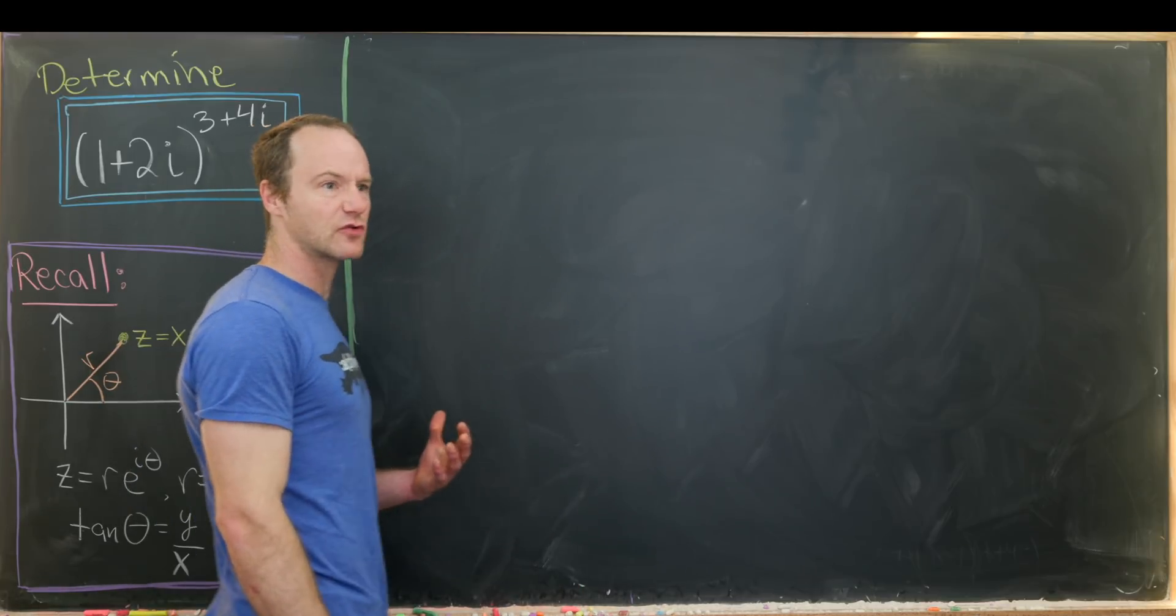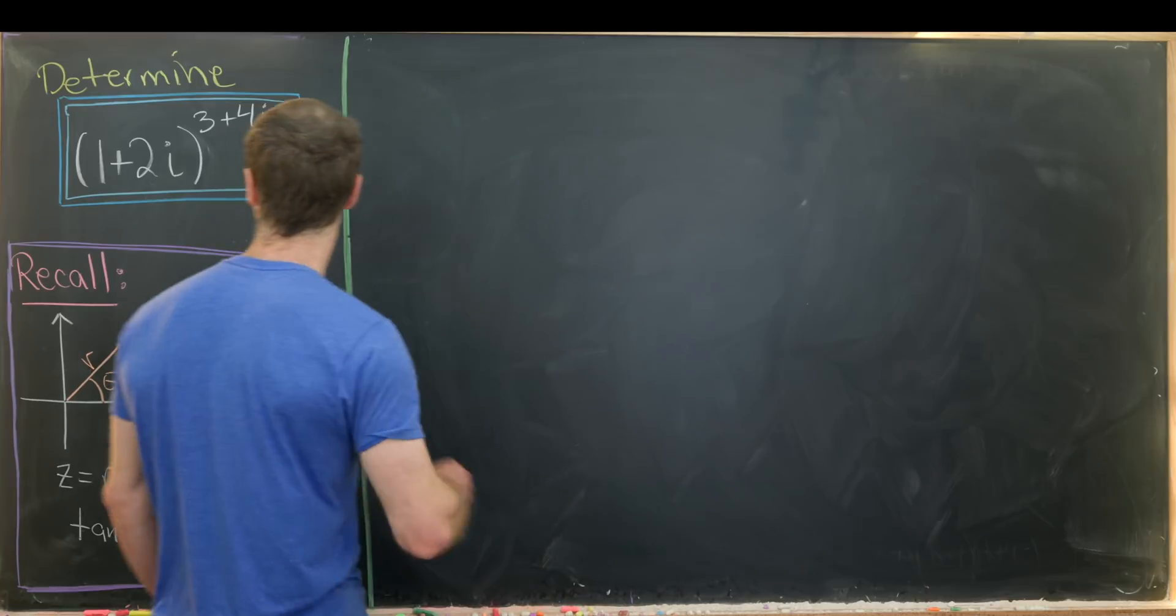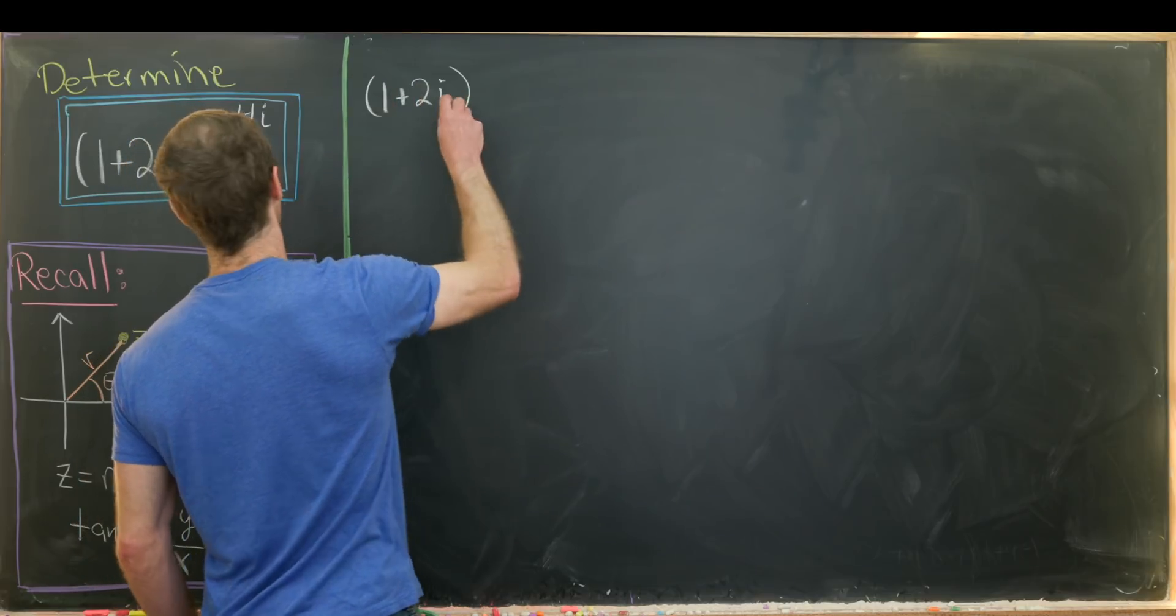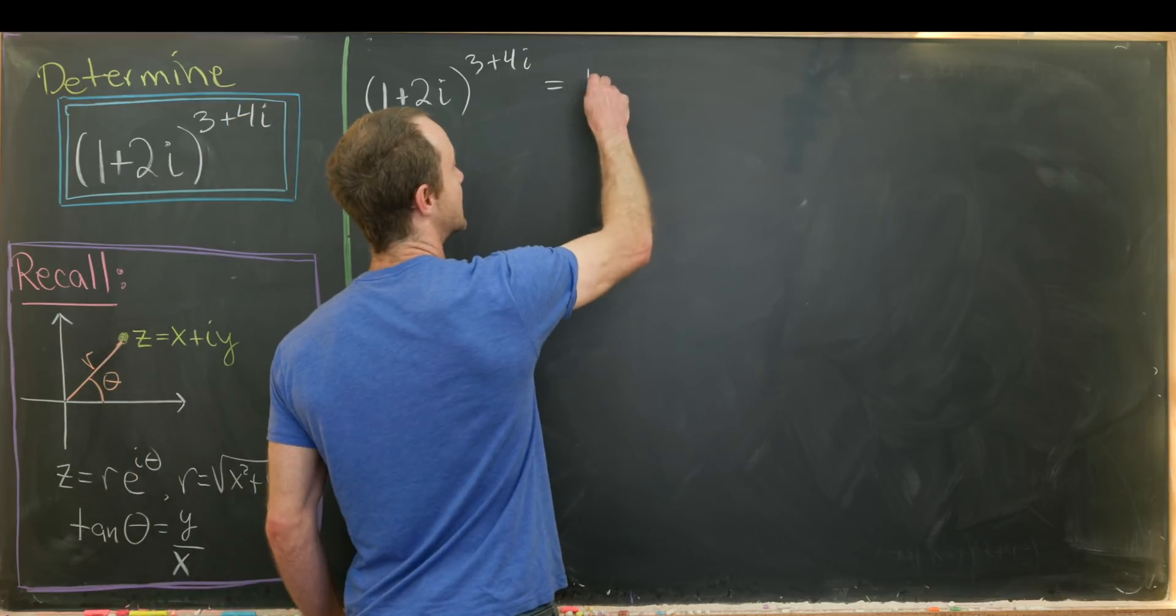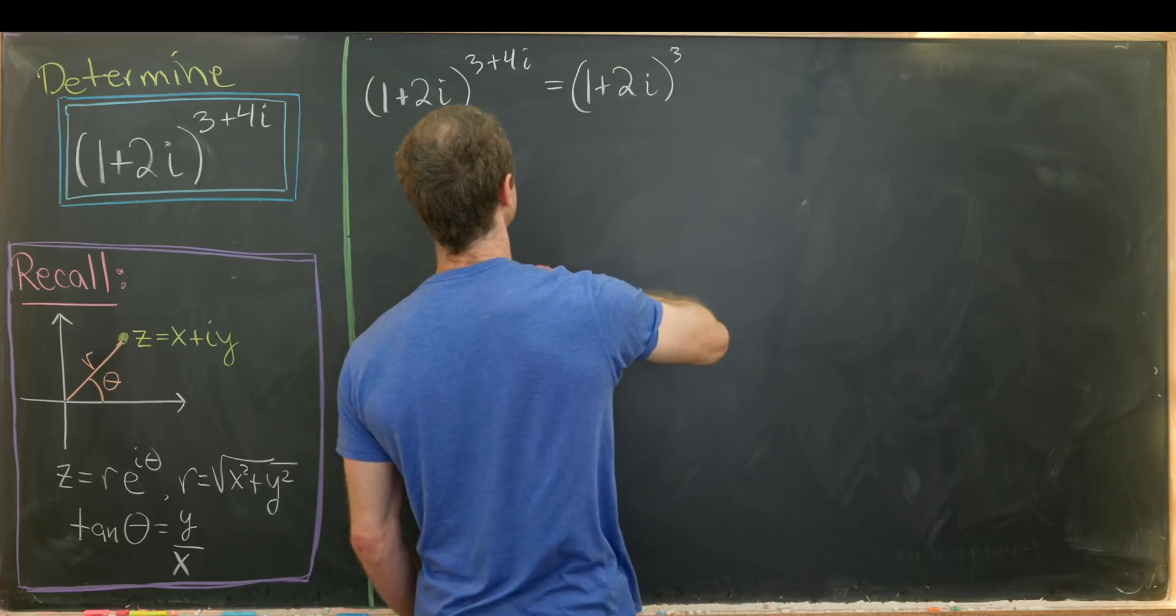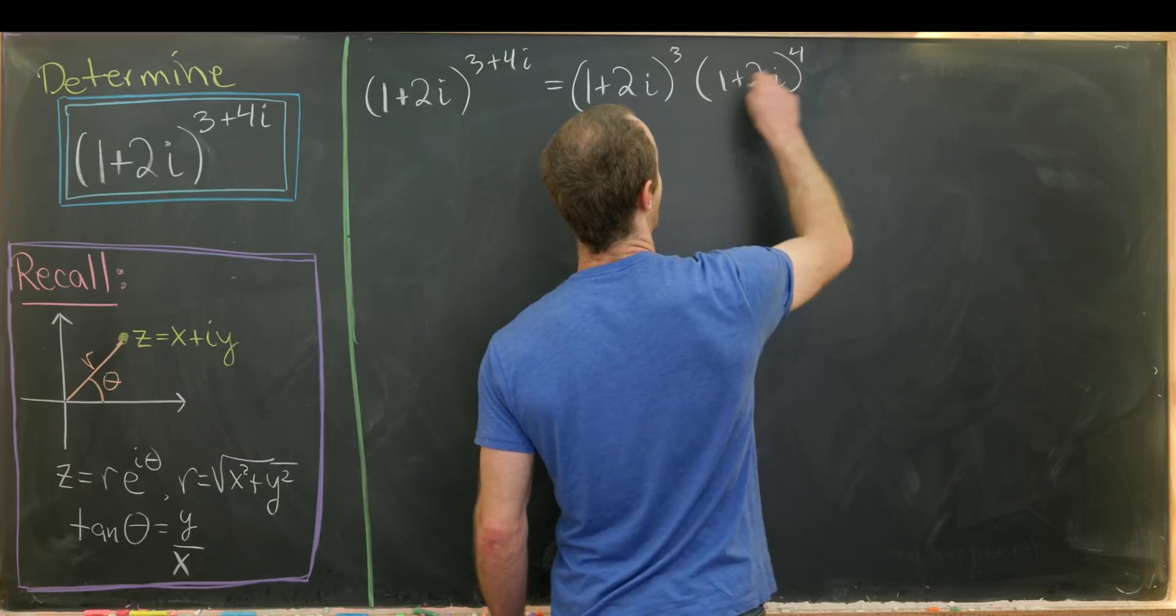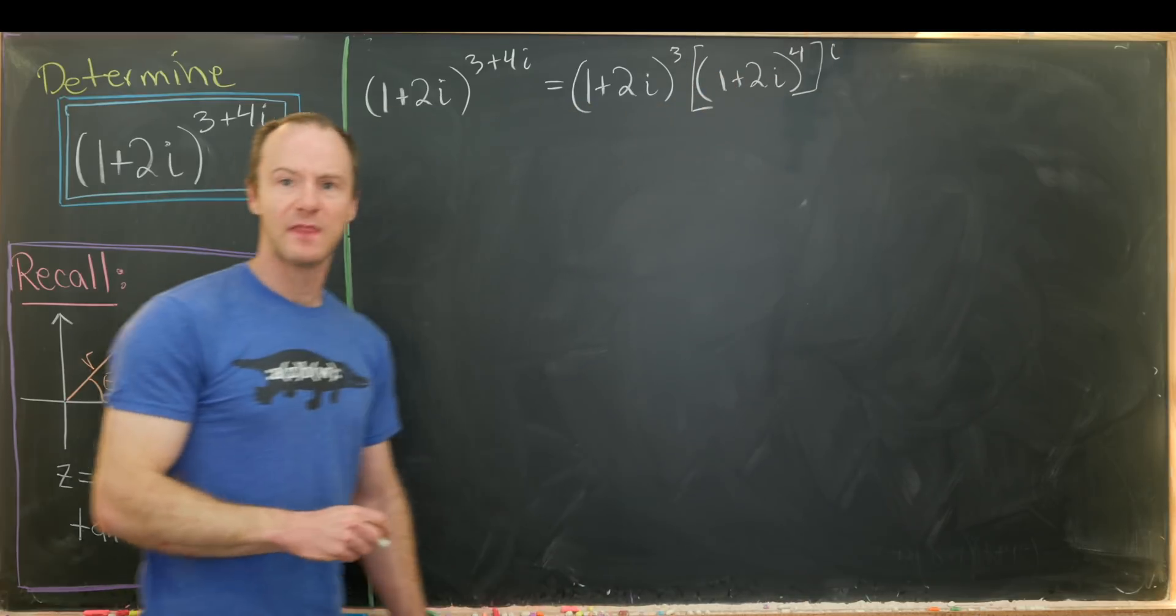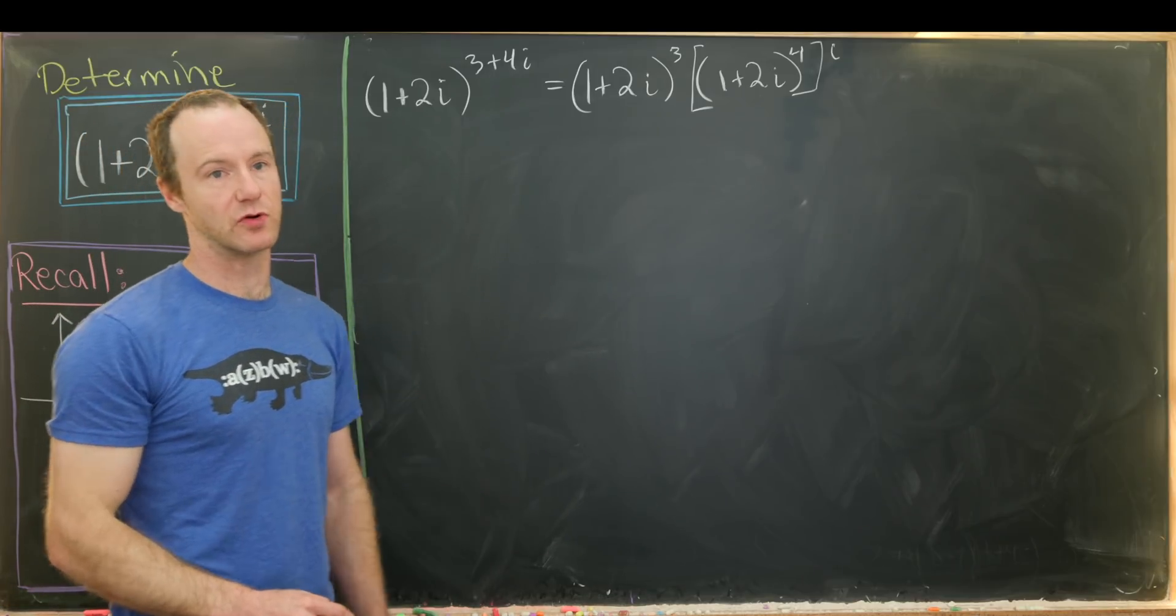And I'd like to point out that standard rules for exponentiation work for complex numbers, and we won't really prove that. So that means the number we want to calculate, 1 plus 2i to the power 3 plus 4i, can be calculated as 1 plus 2i cubed times 1 plus 2i to the 4th power, all raised to the i-th power. And that'll be how we want to do this. I think that's maybe the simplest way of approaching this problem.